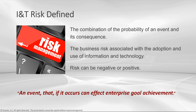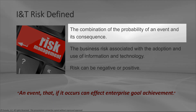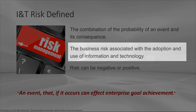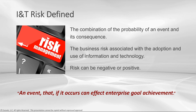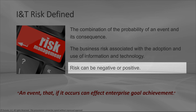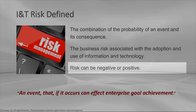We'll start by defining information and technology risk. It's a combination of the probability or likelihood of an event and its consequence — what could go wrong, how can this risk harm my organization. It's the business risk associated with adoption and use of information and technology. These aren't always IT-related risks because they may affect a business goal, making them a business risk. This could be negative or positive: a negative risk means nothing good comes from it; a positive risk is like an investment — if it wins, you win big; if it loses, you only lose your investment.